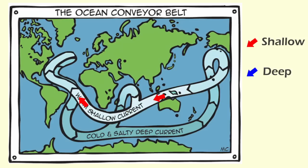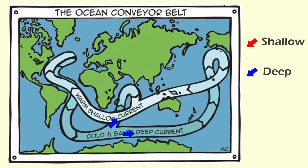Currents slowly turn over water in the entire ocean, from top to bottom. It's somewhat like a giant conveyor belt, moving warm surface water downward and forcing cold waters upward.